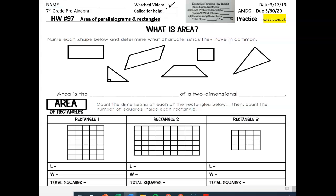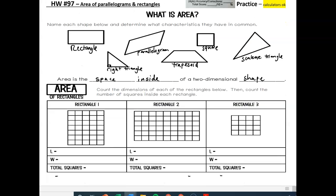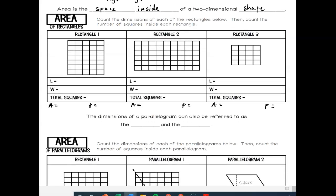So today we're learning about area of parallelograms and rectangles. What is area? First let's start by naming these shapes. We have quadrilaterals, triangles - rectangles, right triangle, parallelogram, trapezoid, square, and a scalene triangle where no sides are equal. Area is the space inside of a two-dimensional shape. Basically, how many one by one unit squares can I fit inside of a shape? We could count all these squares or figure out the length and width and do it that way.